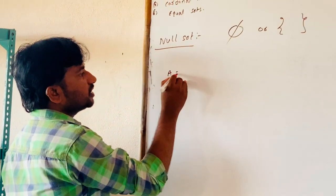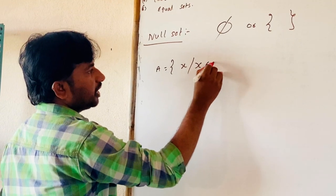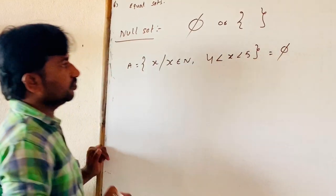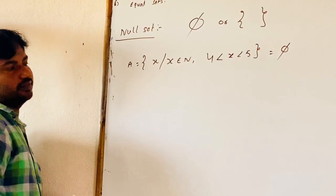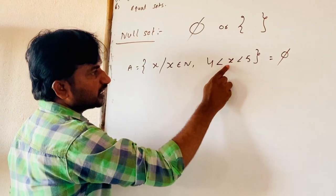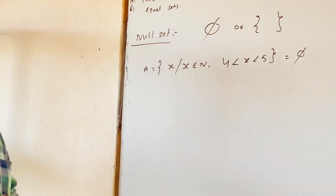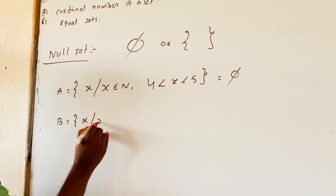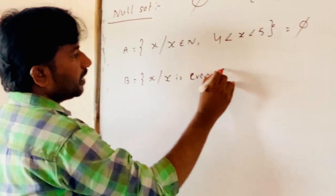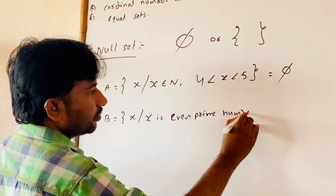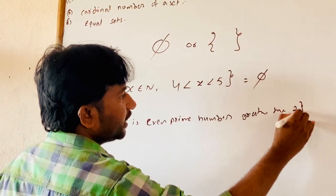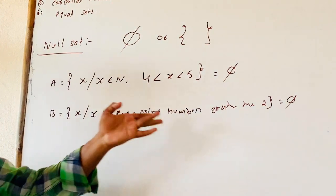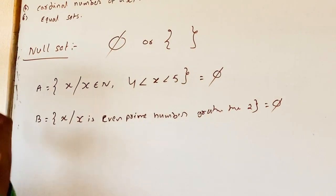For example, set A equals {x such that x belongs to N, 4 less than x less than 5} — this is equal to phi, because there is no natural number between 4 and 5. Also, set B equals {x such that x is an even prime number greater than 2} — this is also equal to phi. So B is a null set.